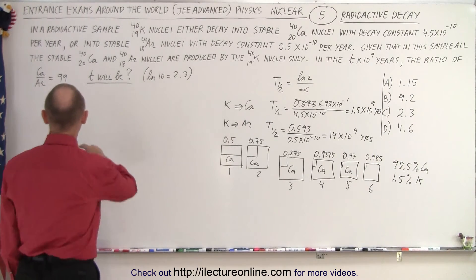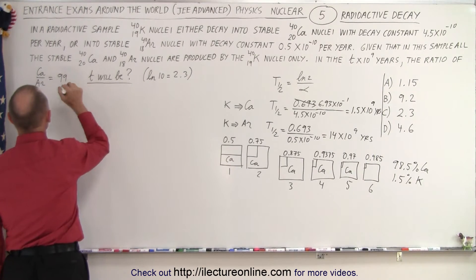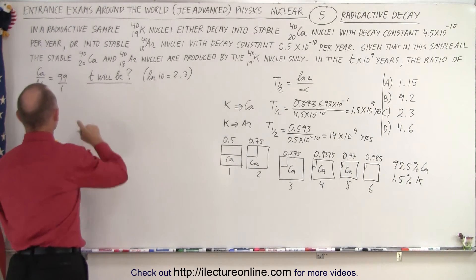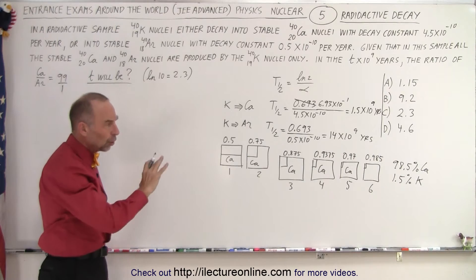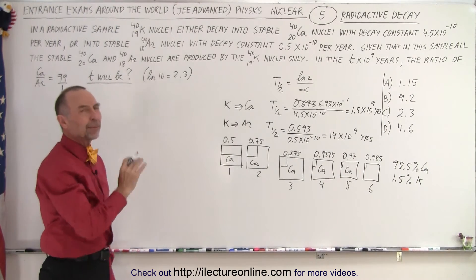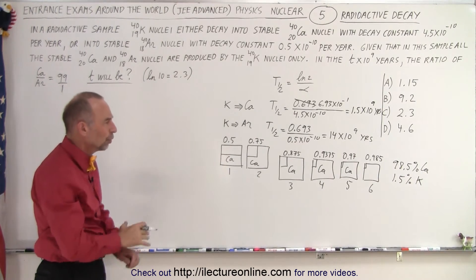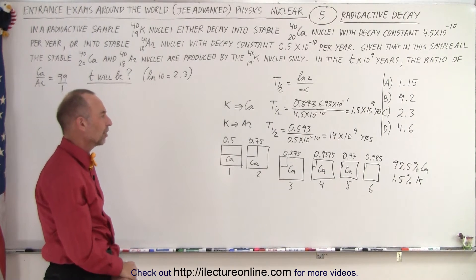But notice we're looking for a ratio of 99 to 1. So during that process, how much argon would have developed out of this decay process?